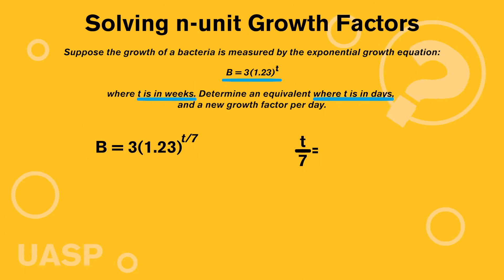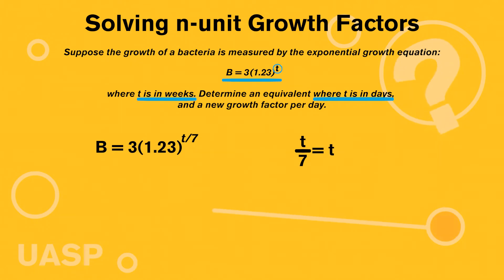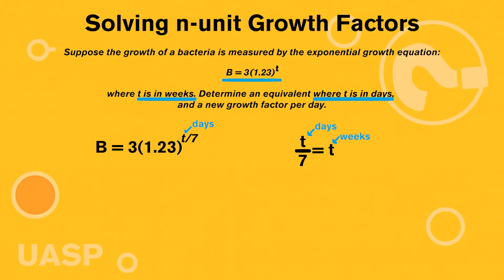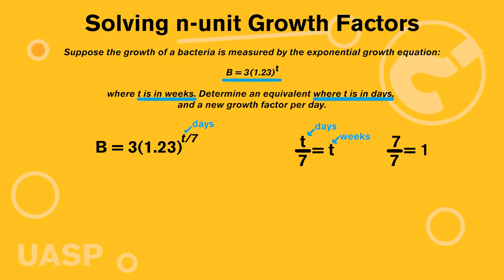If we divide t by 7, what this will do is essentially make t divided by 7 equal to our original t. It looks a little funky — t over 7 equals t — but it's important because this t is in weeks and this t is in days. We know this is true because if we plug in 7 days, we get 7 over 7, which equals 1, which is 1 week.